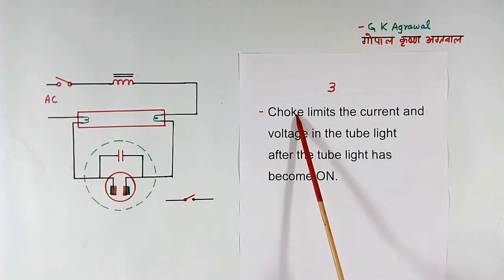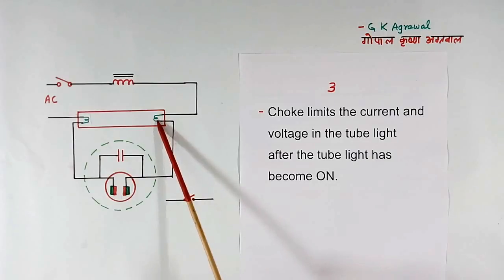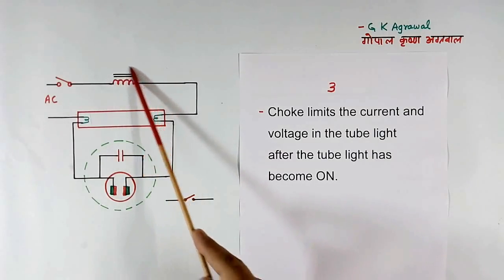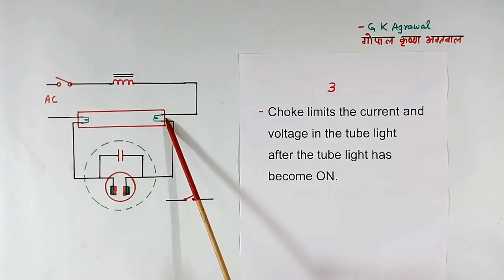Third function of choke is to limit the current and voltage in the tube light after the tube light has become on. Then this choke will limit the current flowing in this tube light and voltage across this tube light.